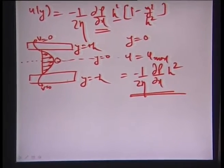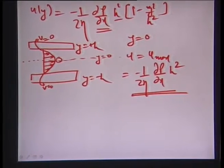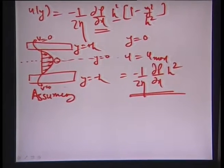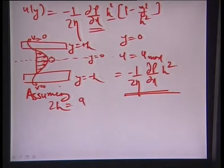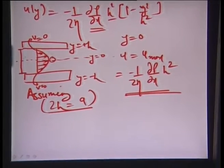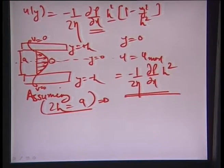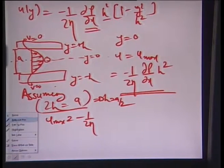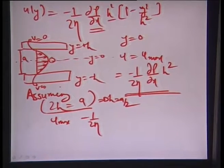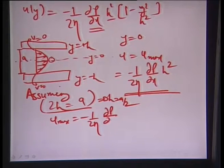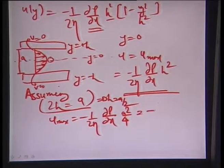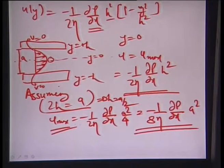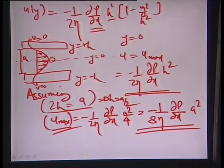Assuming 2h = a (the distance between the two plates), h = a/2, and u_max becomes −(1/8η)(dp/dx) · a². That is the maximum velocity in this channel flow. Let us now find the maximum flow rate resulting from this velocity function u.